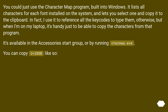You could just use the Character Map program built into Windows. It lists all characters for each font installed on the system and lets you select one and copy it to the clipboard. In fact, I use it to reference all the key codes to type them otherwise, but when I'm on my laptop it's handy just to copy the characters from that program. It's available in the Accessories start group, or by running charmap.exe. You can copy U+200B like so.